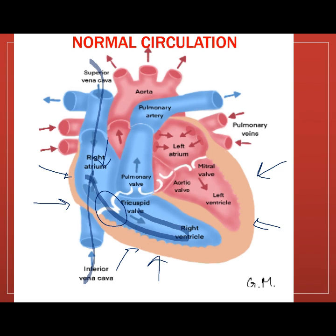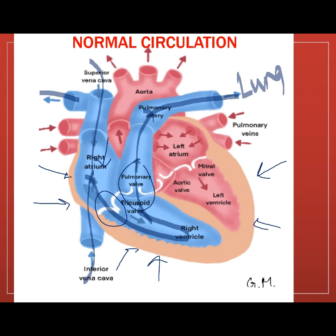This contraction also opens the pulmonic semilunar valve, which takes the deoxygenated blood through the pulmonary arteries and to the pulmonary capillaries which surround the alveoli.